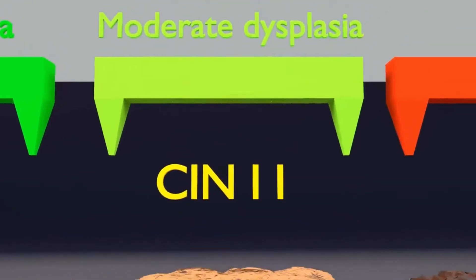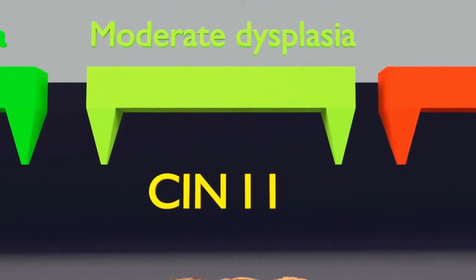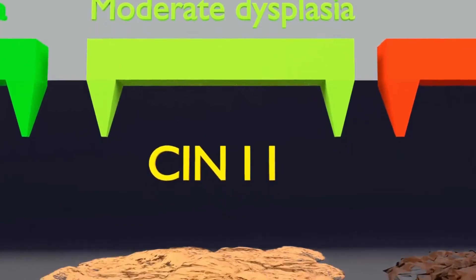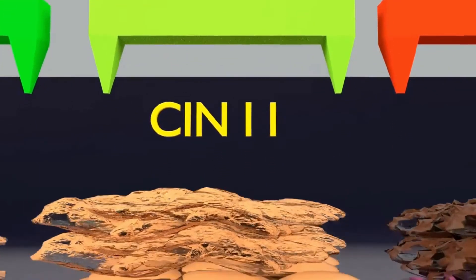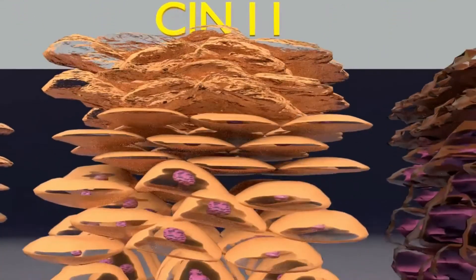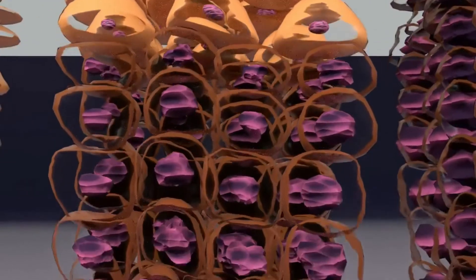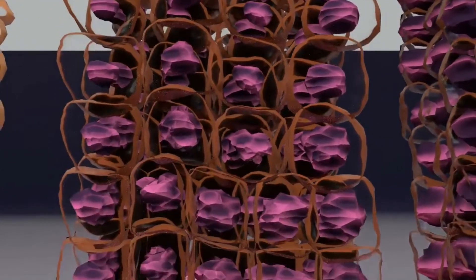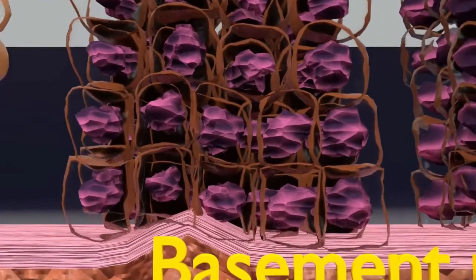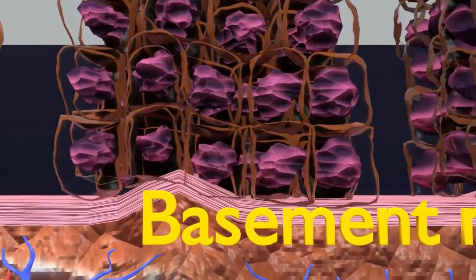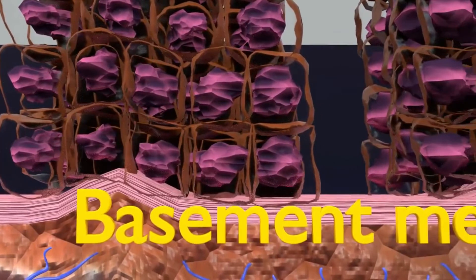Now you see CIN2 or moderate dysplasia. Moving down to the deeper layers, you can appreciate that the lower two-thirds of the epithelium is involved with similar changes in nucleus as seen in CIN1, but these changes are of a moderately severe degree as compared to CIN1. Therefore CIN2 is also known as moderate dysplasia.